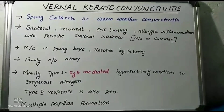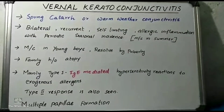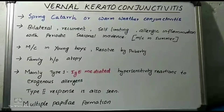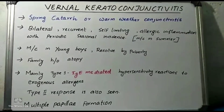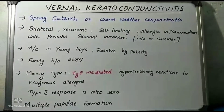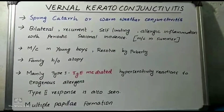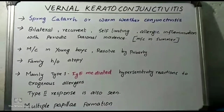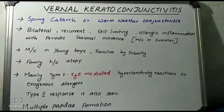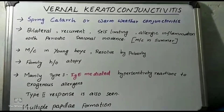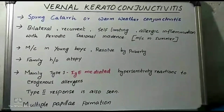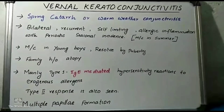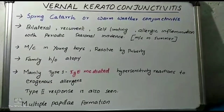Coming to the etiopathogenesis, it is mainly a type 1 IgE-mediated hypersensitivity reaction to exogenous allergens like pollen grains. A type 2 response has also been seen. The conjunctival epithelium undergoes hyperplasia, the adenoid layer shows cellular infiltration, and the fibrous layer shows proliferation which later undergoes hyaline changes. These pathological changes lead to the formation of multiple papillae in the upper tarsal conjunctiva.